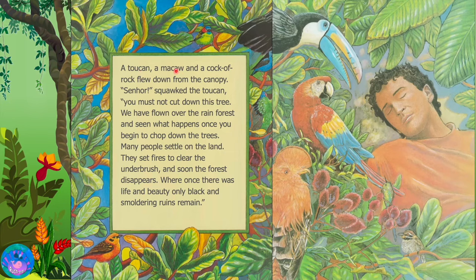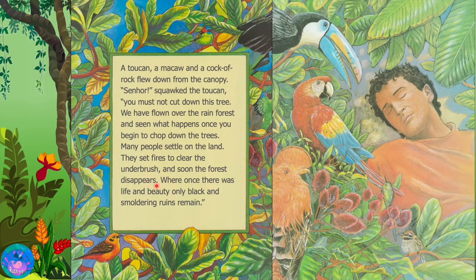A toucan, a macaw, and a cock of the rock flew down from the canopy. Senor, squawked the toucan, you must not cut down this tree. We have flown over the rainforest and seen what happens once you begin to chop down the trees. Many people settle on the land. They set fires to clear the underbrush, and soon the forest disappears. Where once there was life and beauty, only black and smoldering ruins remain.